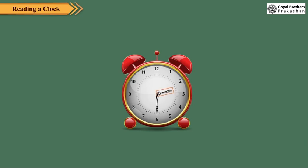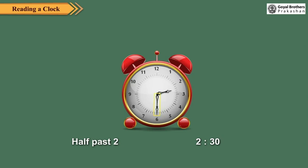Now, observe this clock. Here, the hour hand is halfway between 2 and 3, and the minute hand is at 6. So the time is 30 minutes after 2. We write it as half past 2 or 2.30. So when the minute hand is at 6, the time is half past the hour.